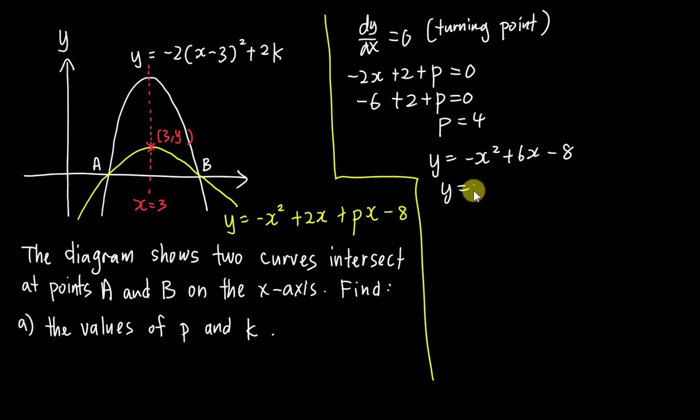All right, then I will make y equals 0 because it's on the x-axis. Then I will get about negative x square plus 6x minus 8 equals 0. I prefer my x square is positive, so I multiply negative 1 for the whole equation. Then I will get this one and then I will just factorize it.